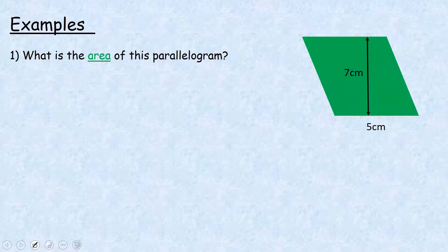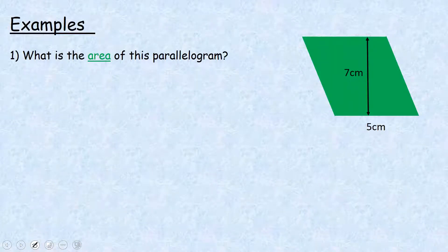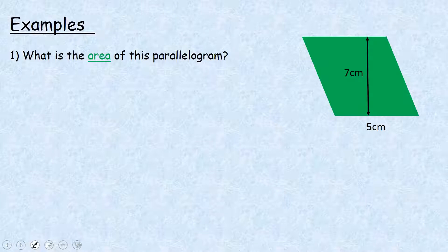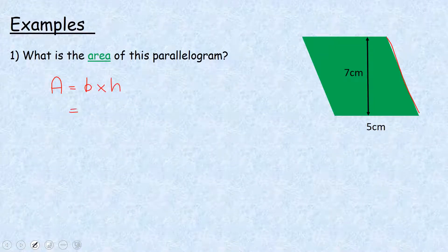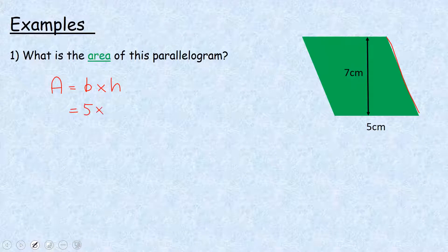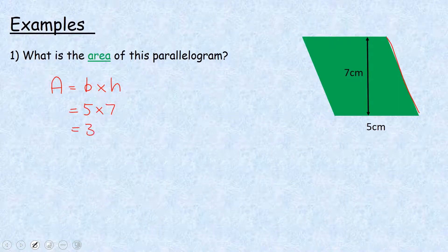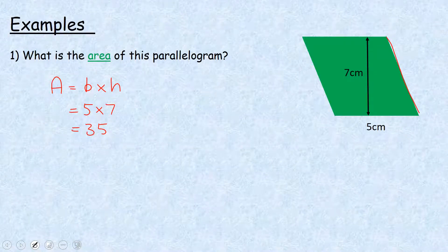Let's have a look at a couple of examples of parallelograms. We've got this parallelogram here: base of 5 centimetres and vertical height of 7 centimetres. We're not interested in the length of the sloped sides. The area equals base multiplied by height: 5 times 7 is 35. Since the lengths are in centimetres, our area is in centimetres squared.